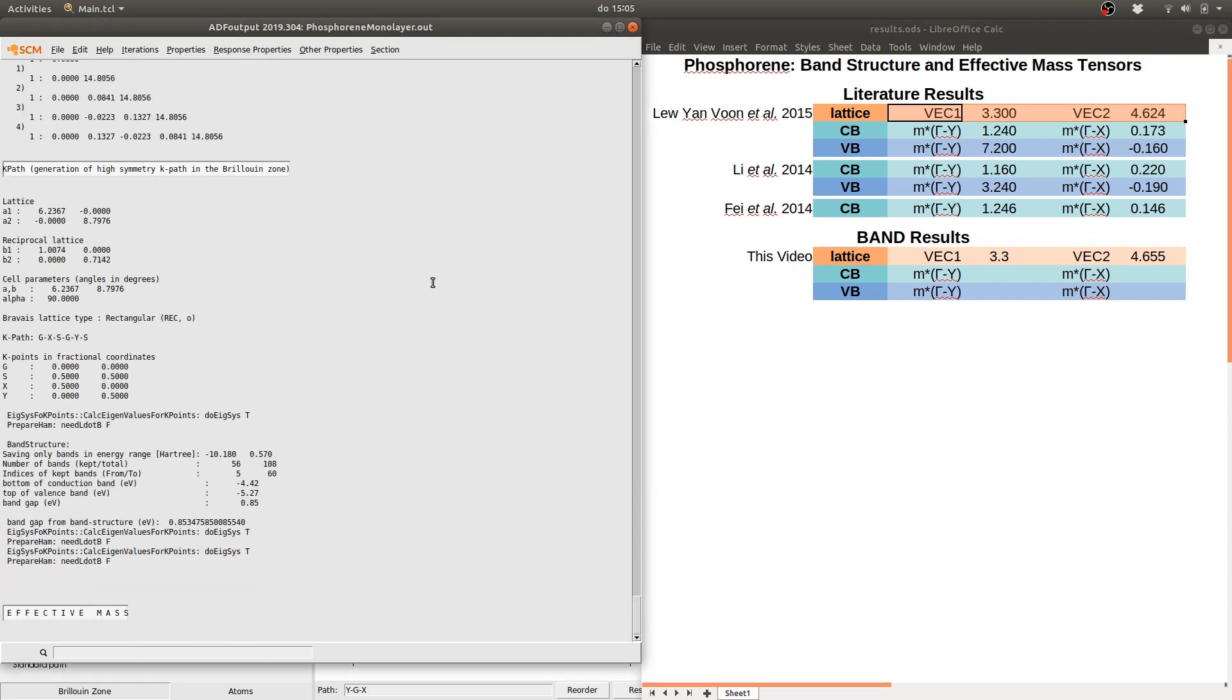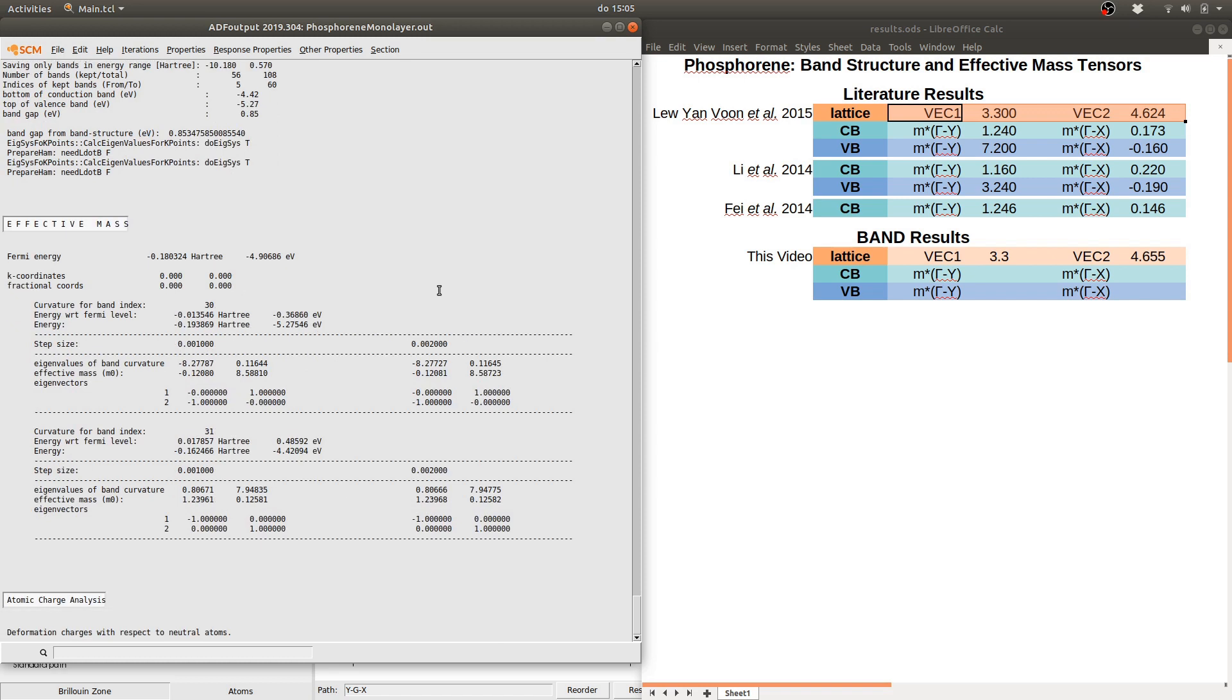If we scroll down further towards the end we will then finally arrive at the section for the effective masses. This is organized band-wise so each band around the Fermi gap has its eigenvalues of the band curvature and the resulting effective masses printed here.